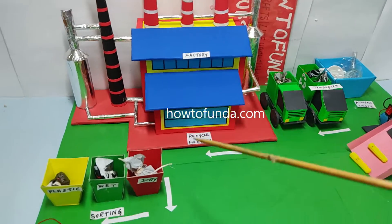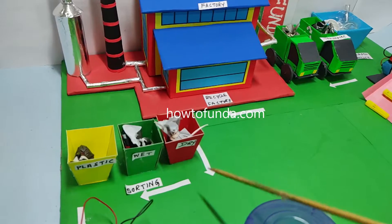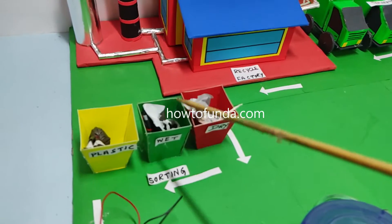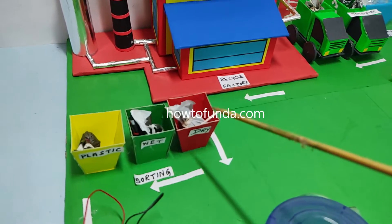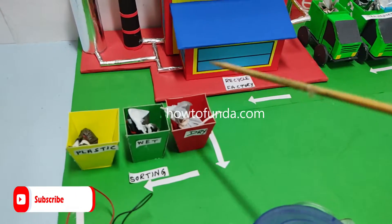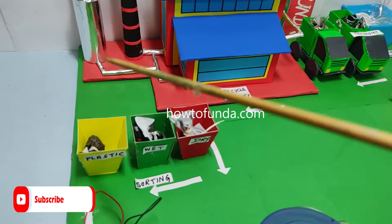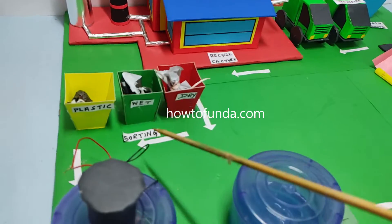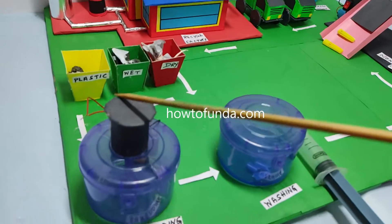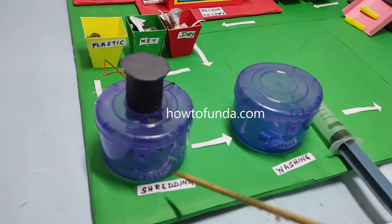Within the factory, they do a sorting process where they check which plastics can be recycled. They segregate wet and dry items, picking up only the plastics that can be recycled. After they pick it up, they do shredding.